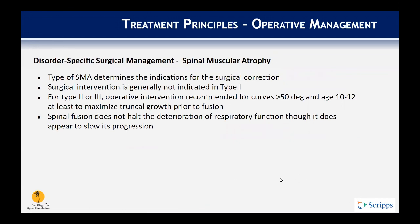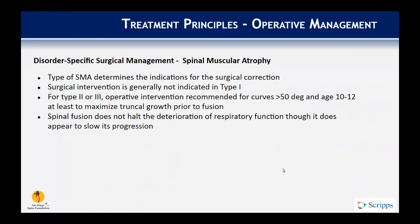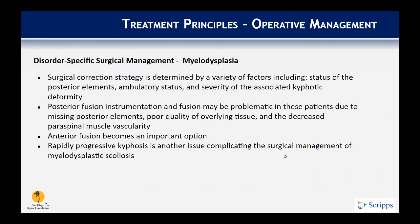For spinal muscular atrophy, surgical intervention is generally not indicated in Type 1, while Types 2 and 3 are recommended for intervention at curves greater than 50 degrees. Spinal fusion does not halt deterioration of respiratory function in these patients but does seem to slow progression. In myelodysplasia, surgical correction is complicated by poor quality or absent posterior elements, significantly poor overlying tissue quality, and decreased paraspinal musculature and vascularity. Anterior fusion becomes an important option as it provides a large surface area for fusion while avoiding posterior complications.